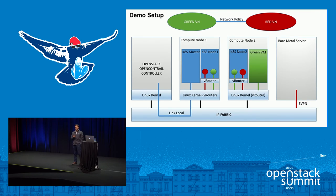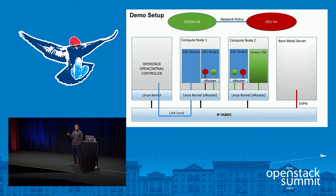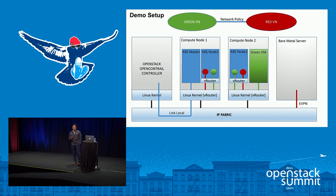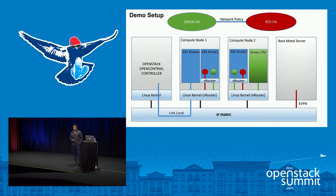To give a concrete example: we have two green pods and two red pods all in the Kubernetes cluster. We have a green VM which is an OpenStack VM, and then a bare metal server sitting in the data center but pulled into the red network. So you have two pods in the red network and a bare metal server, two green pods in the Kubernetes environment, and a network policy to make sure the green and red networks can talk to each other. At the end of the demo — we have a recorded demo — we'll see that everybody is able to talk to each other, whether it's the bare metal server, a pod running in Kubernetes, or a VM in OpenStack.